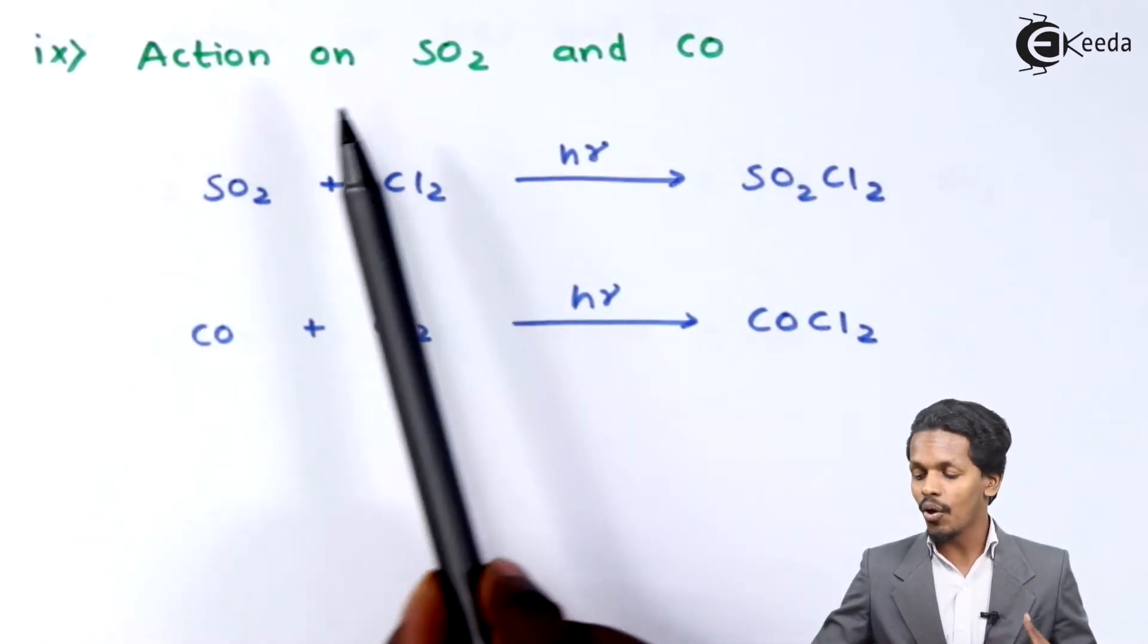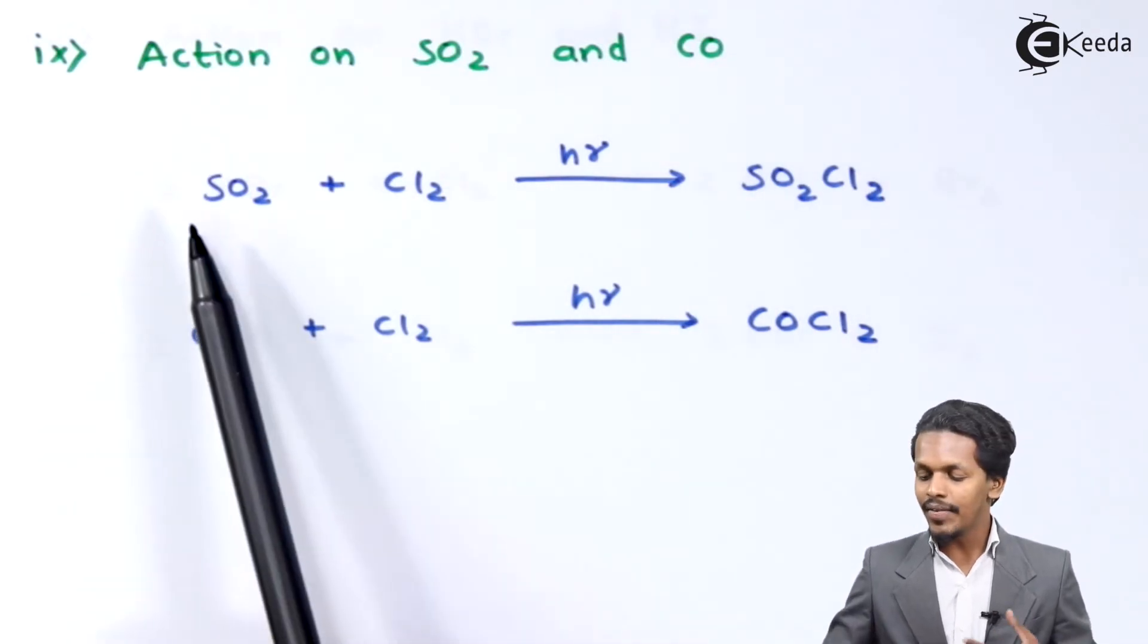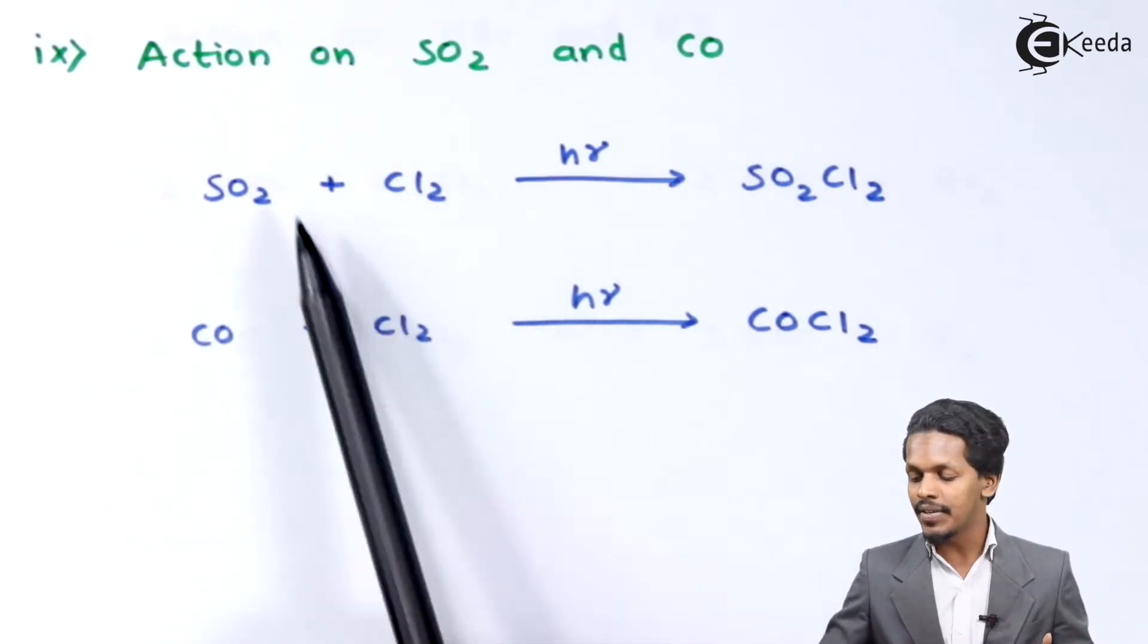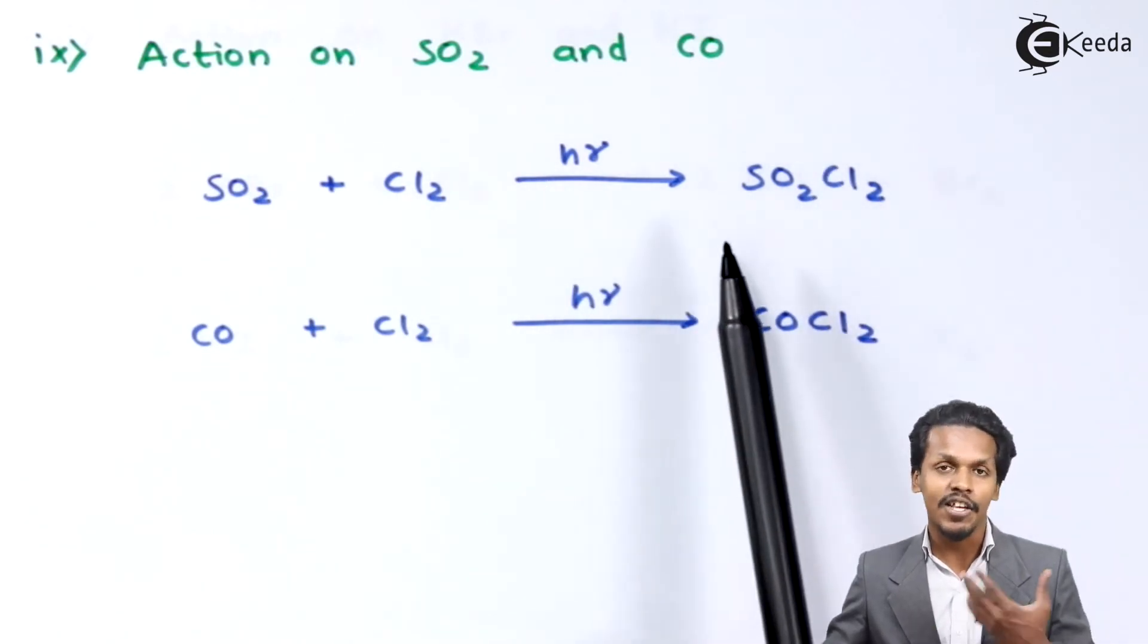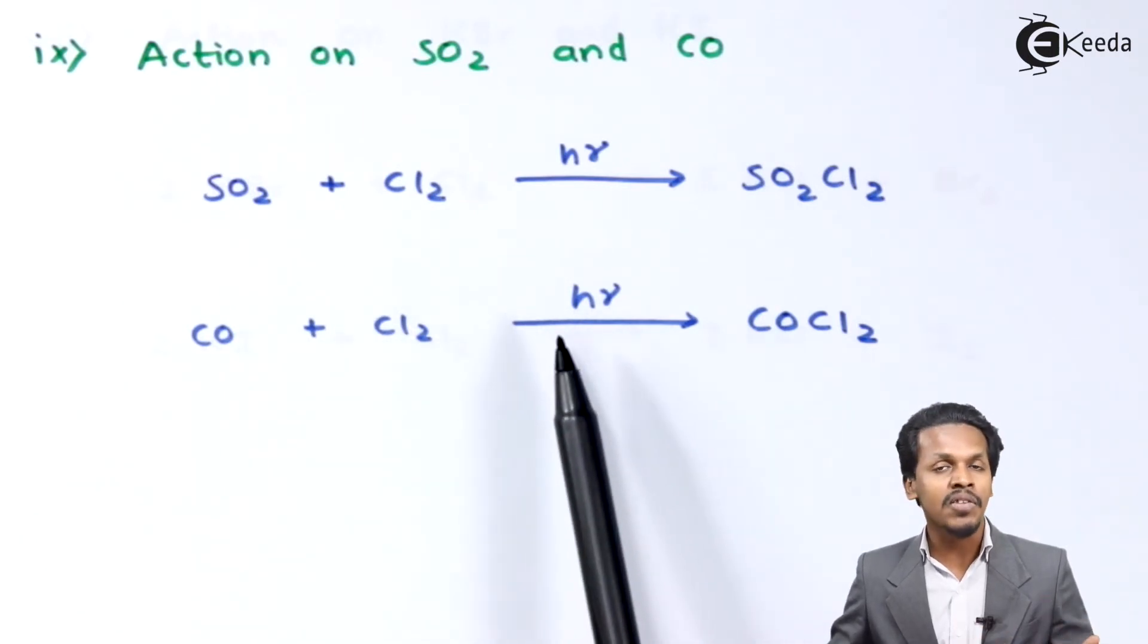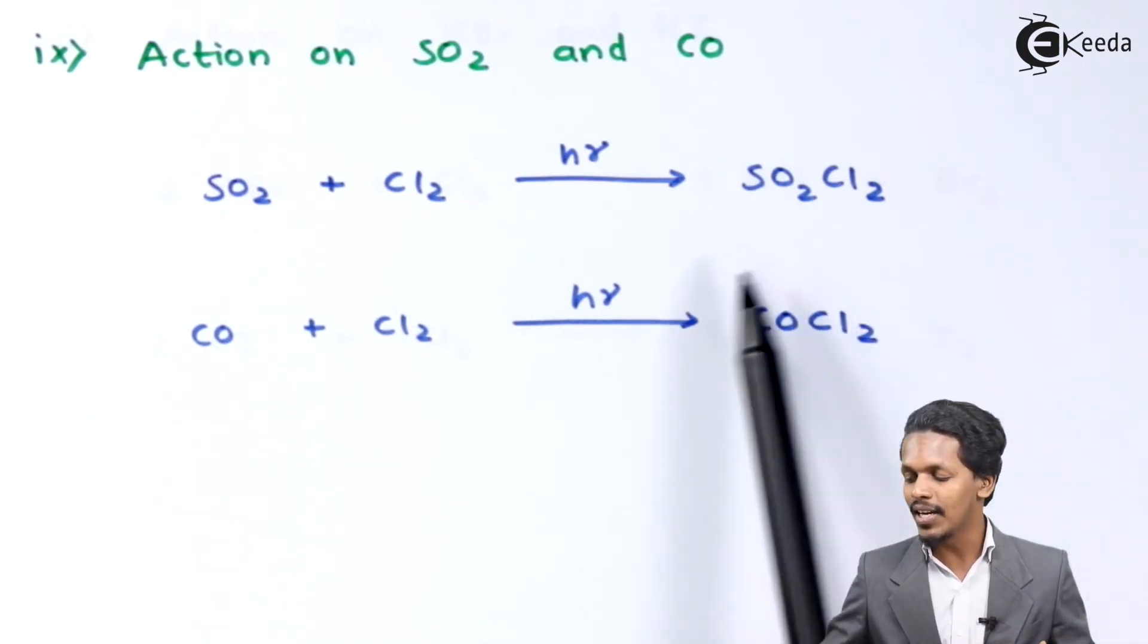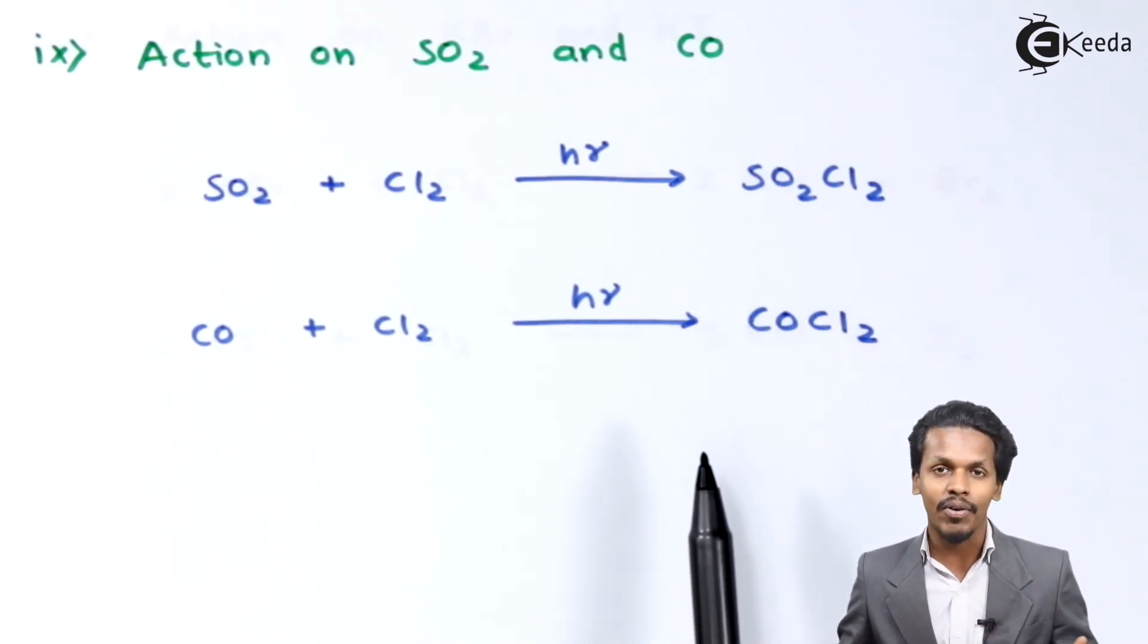The next is action of chlorine on SO2 and CO, that is carbon monoxide. So whenever SO2, that is sulfur dioxide, is treated with Cl2 in the presence of sunlight, the product we get is SO2Cl2, sulfuryl chloride. And whenever CO, carbon monoxide, is treated with Cl2 in the presence of sunlight, we get COCl2, which is also known as phosgene, or we could also call it carbonyl chloride.